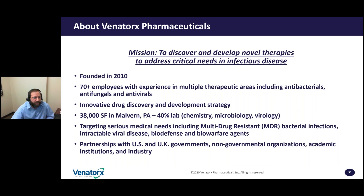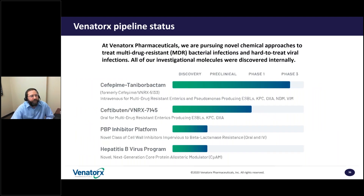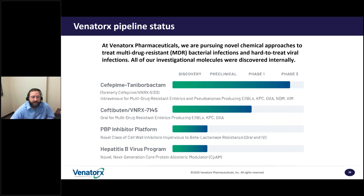Our lead candidate is taniborbactam, a beta-lactamase inhibitor in combination with cefepime, a cephalosporin — that's currently in phase three clinical trials. We also have an oral beta-lactamase inhibitor paired with ceftibuten beginning phase one clinical trials, and we have platforms to identify penicillin-binding protein inhibitors as well as a hepatitis B antiviral program.